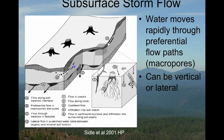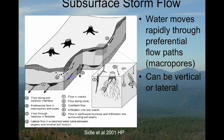You can also have lateral preferential flow paths. A lot of times these develop around the soil-bedrock interface — areas where water is able to be more channelized, moving faster even though it's in the subsurface. These preferential flow paths can be both vertical or lateral downslope through the soil.